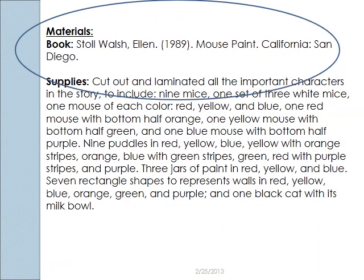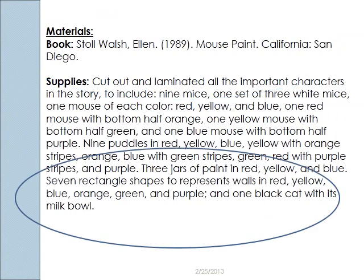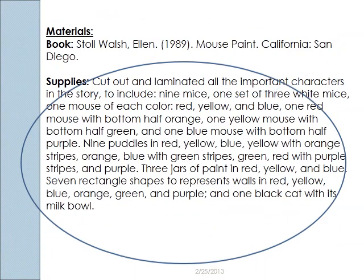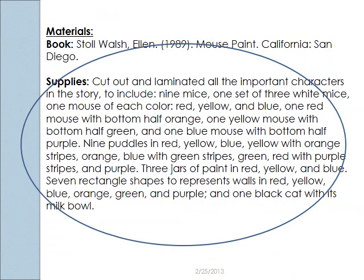You'll see as I go on how those supplies are going to work. The book — notice that it's the complete citation so that somebody else can get it or I can use it again as a reference later. And with the supplies, I've included every single thing I need — all the materials for the anticipatory set, for the procedures, for the guided practice. Everything I need for this lesson is in one list here, so that before I do this lesson I can gather all of these together.